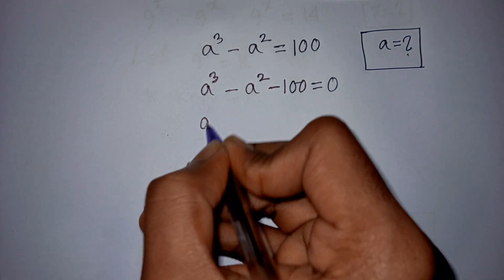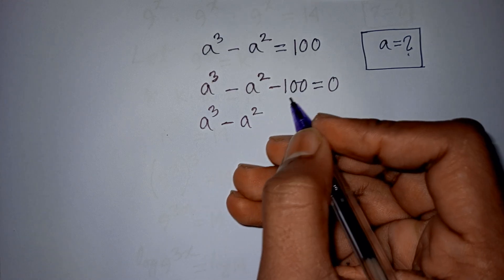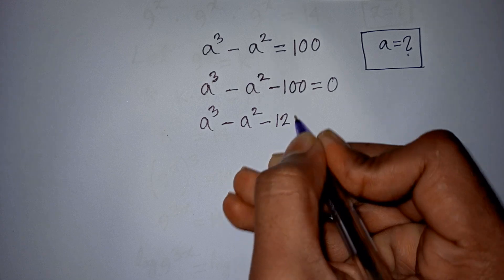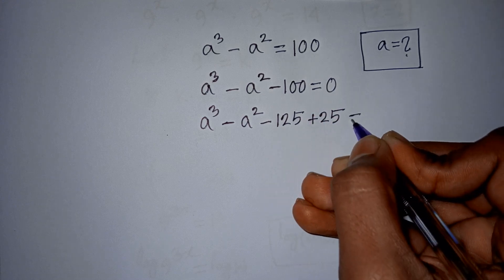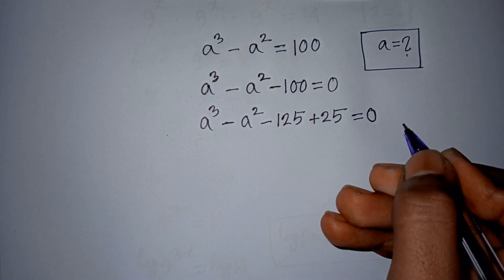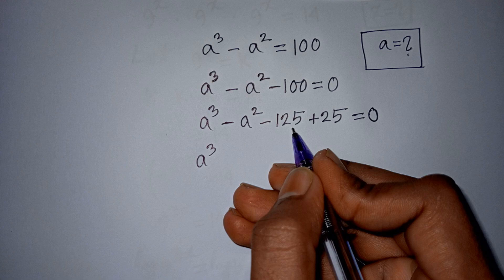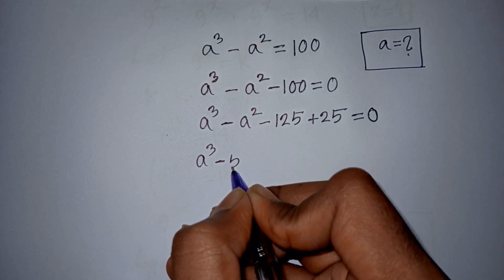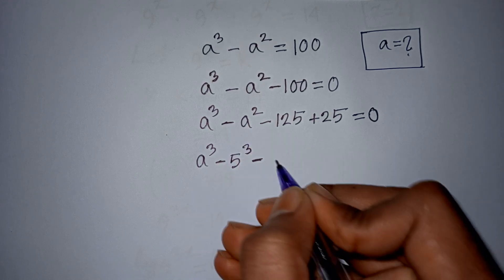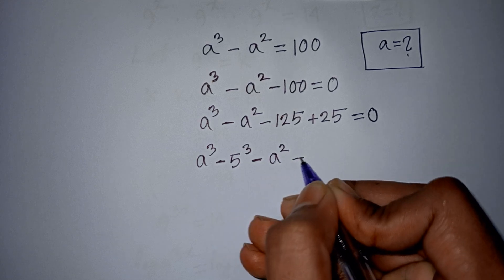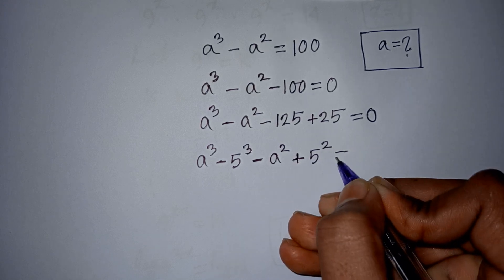Now, we have a³ minus a², then minus 100 can be written as minus 125 plus 25, is equal to 0. So, a³ minus 125 can be written as minus 5³, then minus a² plus 25, same as 5², is equal to 0.